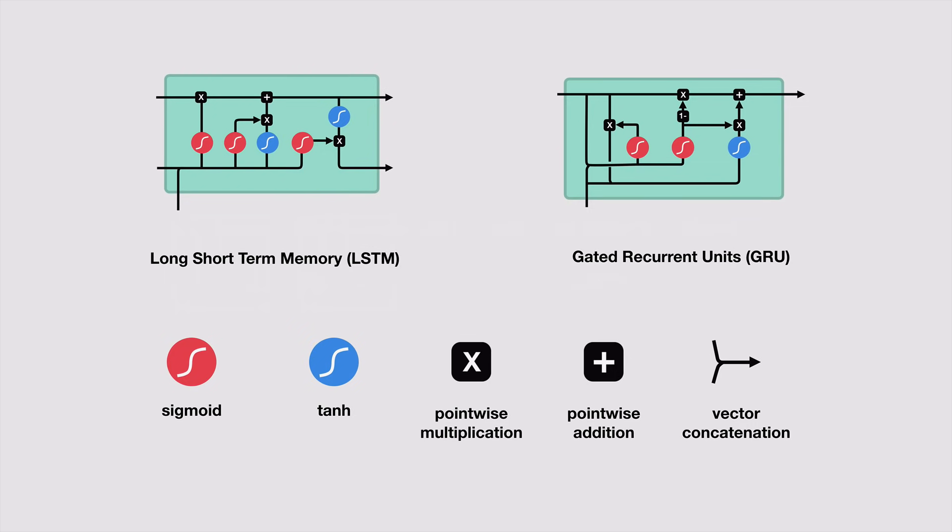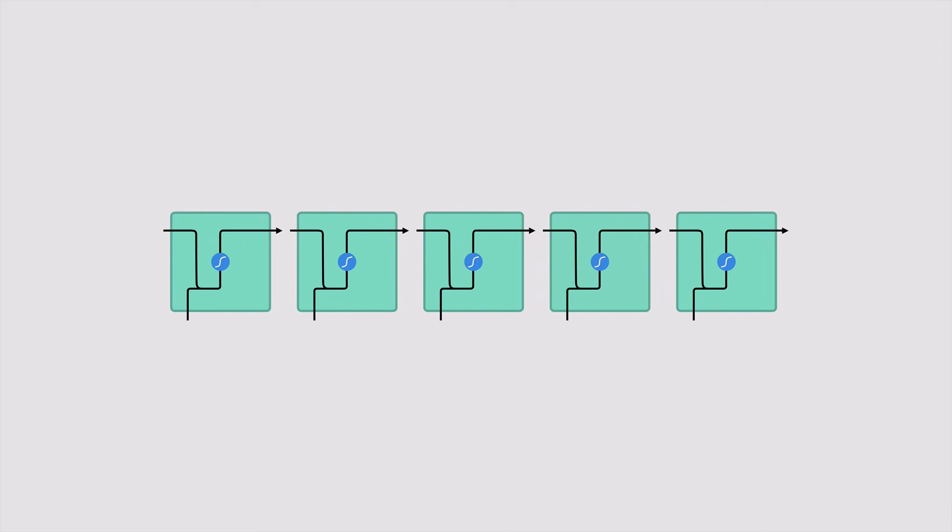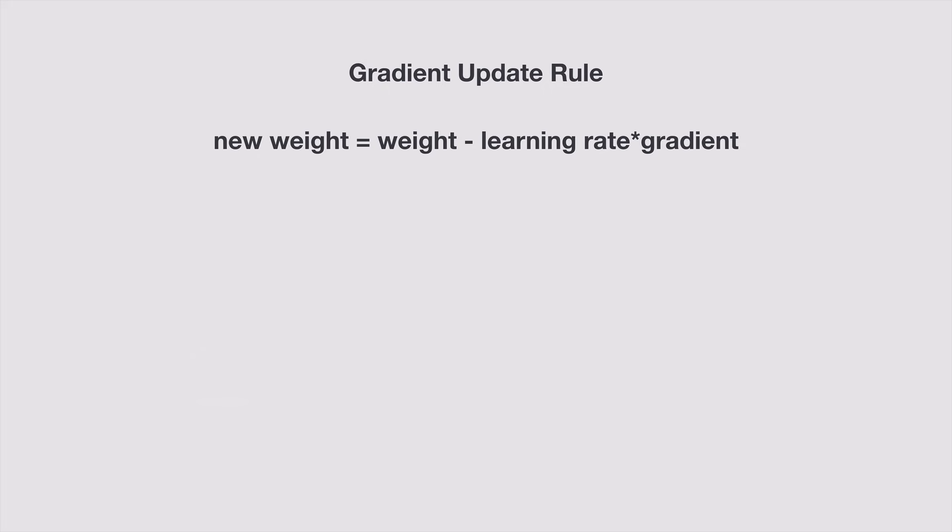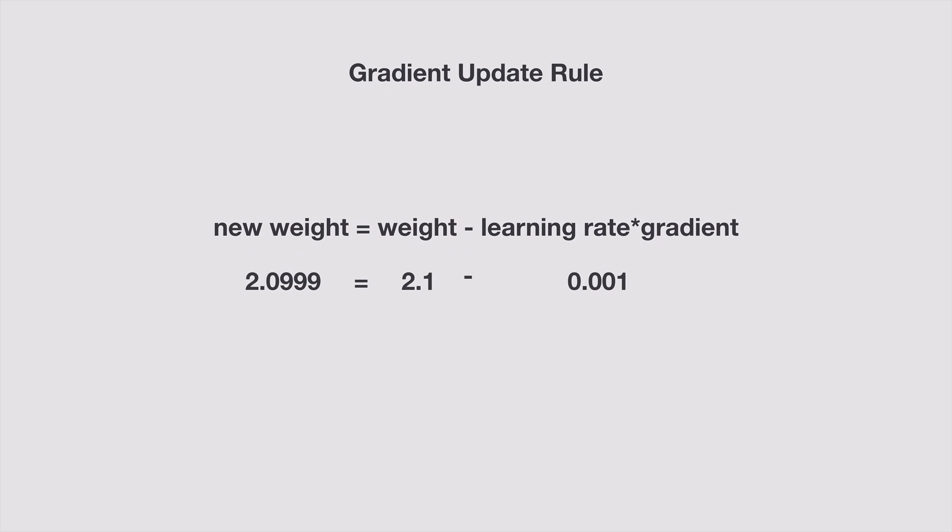If you want to understand what's happening under the hood for these two networks then this video is for you. LSTMs and GRUs are more evolved versions of vanilla recurrent neural networks. During backpropagation, recurrent neural networks suffer from the vanishing gradient problem. The gradient is the value used to update a neural network's weight.